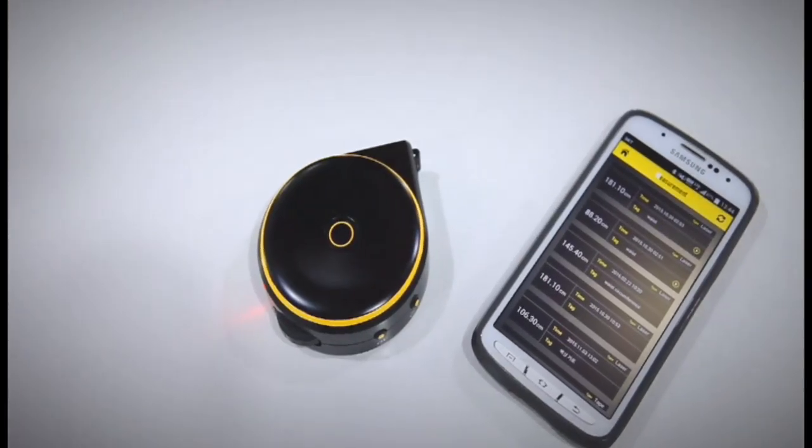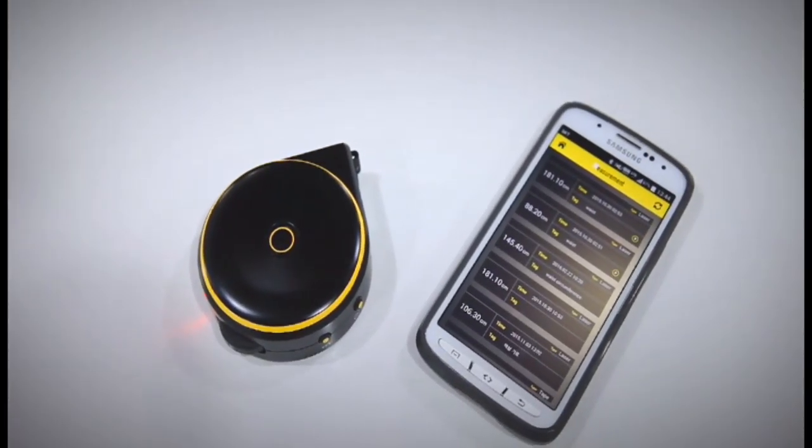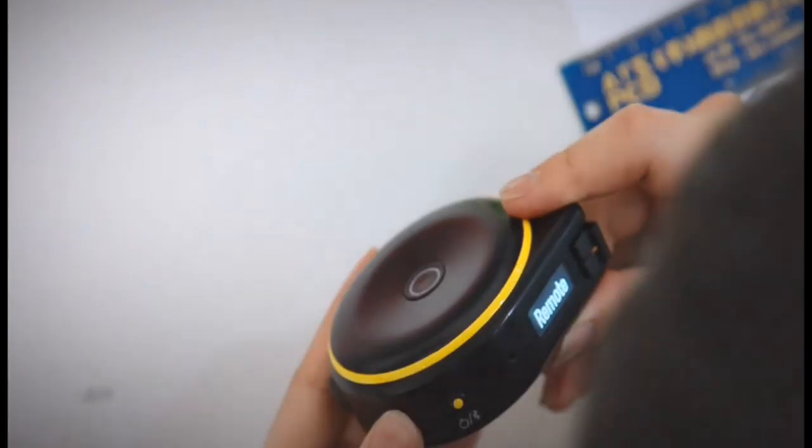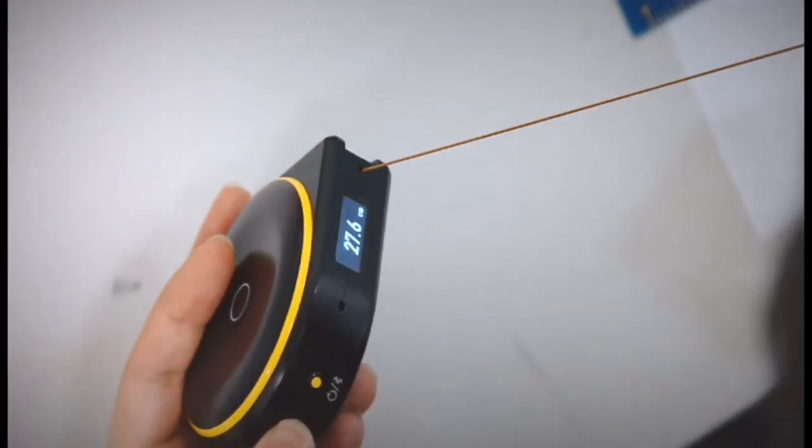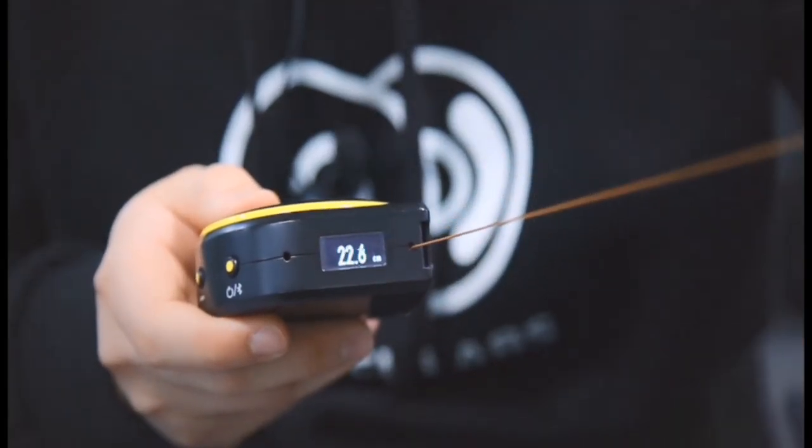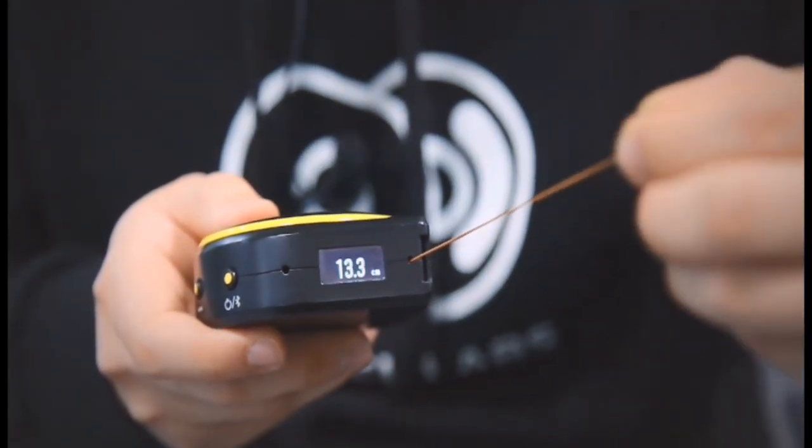The Bagel's smart features are easily accessible. It supports three types of measuring methods. Pull out the string and see the measurements appear on the digital screen. You no longer have to squint to read the fine markings on the tape.